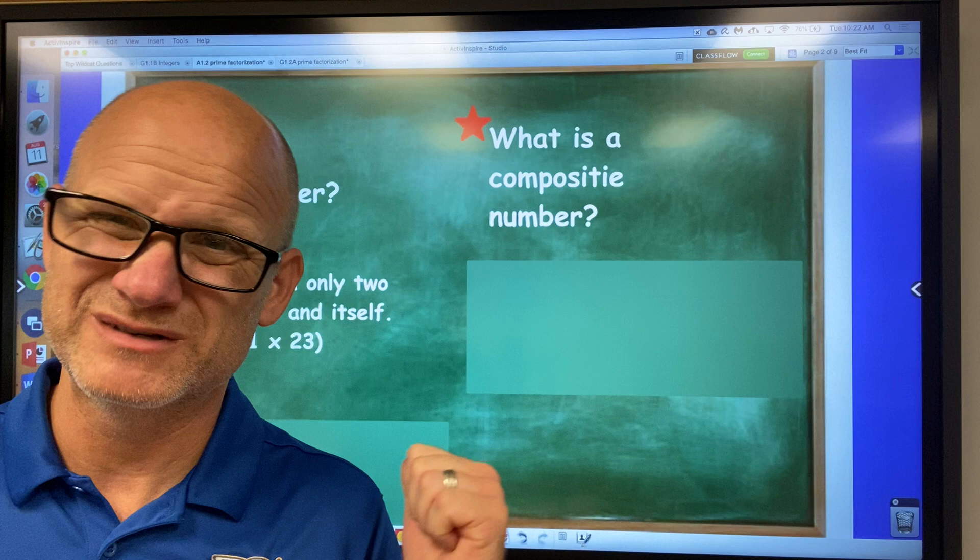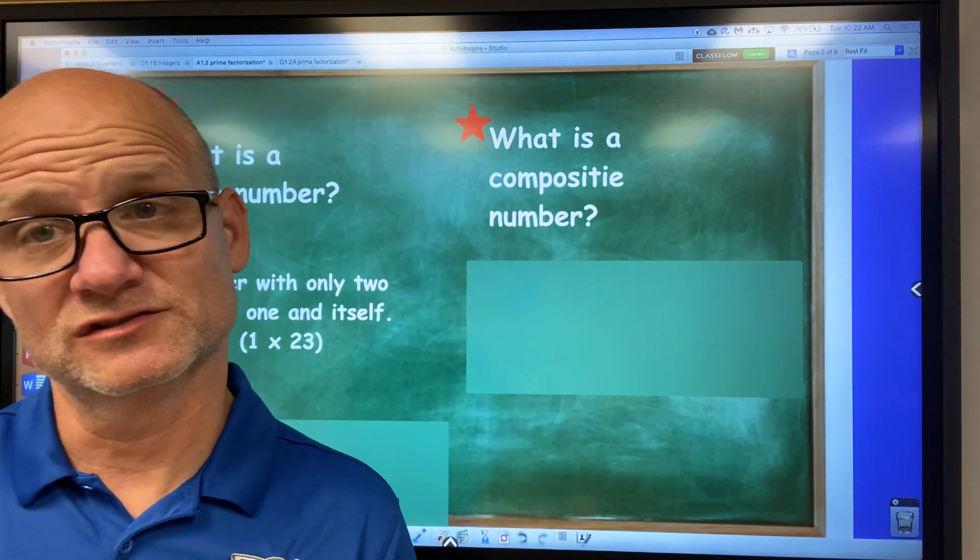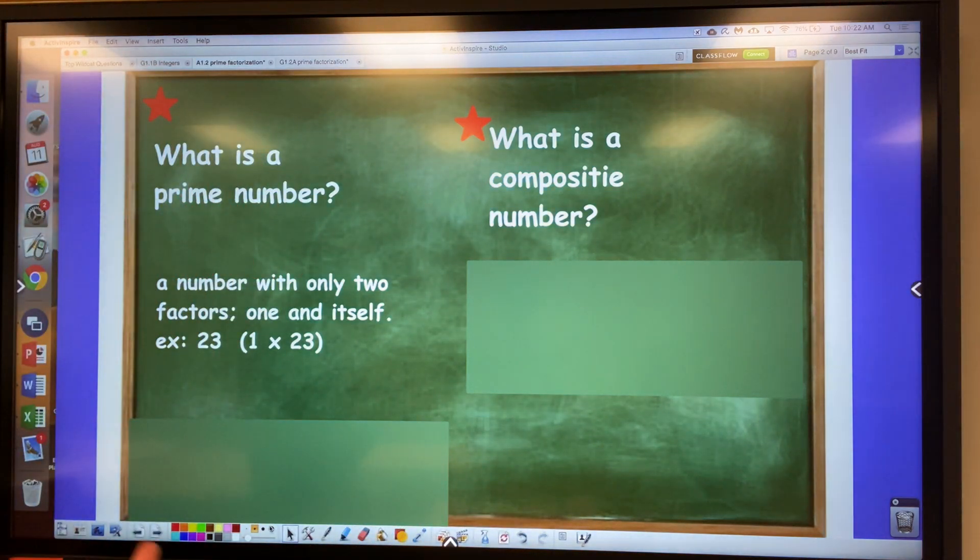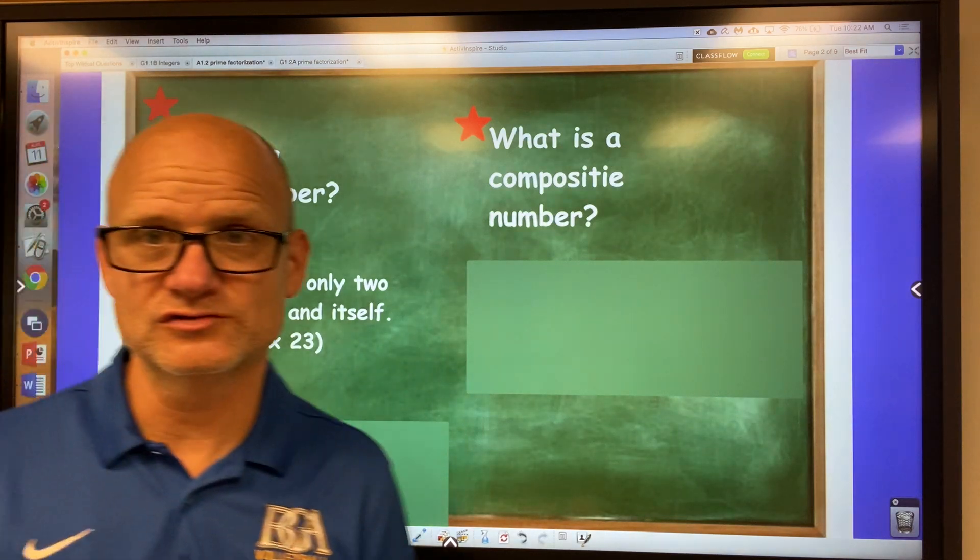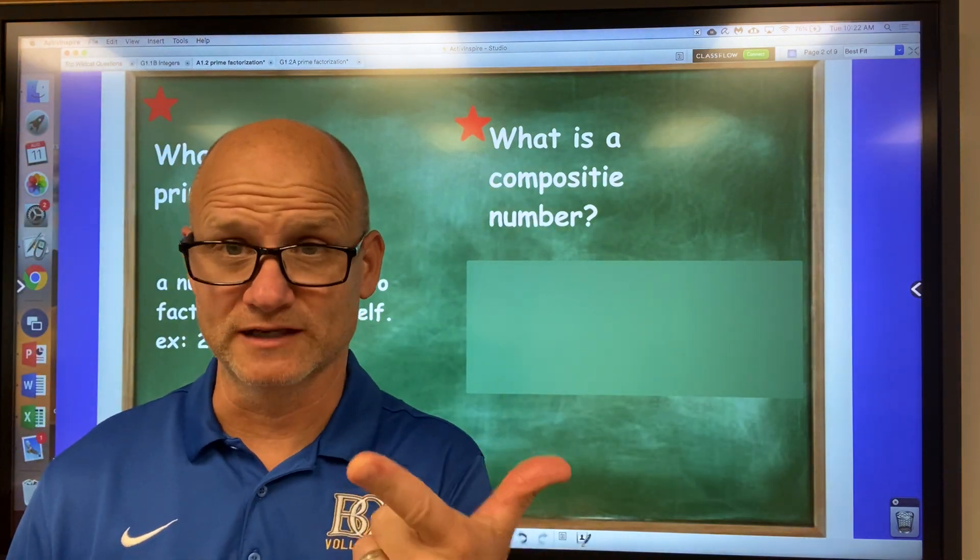You see the red star there? That means take the notes. Prime numbers only have two factors, such as 11. The number 11, the only two factors you can multiply to get 11 is 1 times 11. Prime numbers.